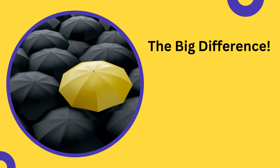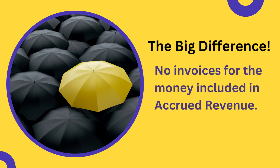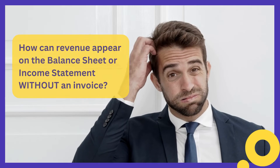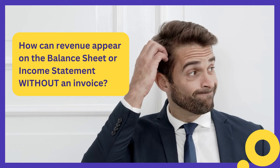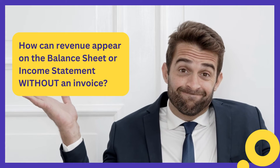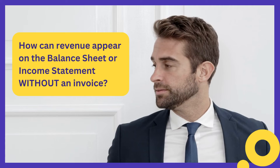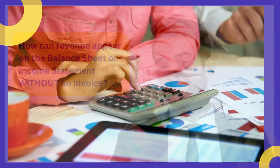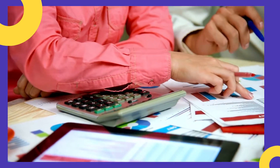The big difference between the two, she explains, is that there are no invoices in the accounting system for the money included in Accrued Revenue. You're a little confused by that, because you wonder how any kind of revenue can appear on the balance sheet or income statement without entering an invoice into the accounting system. Your accountant goes on to explain how this happens.